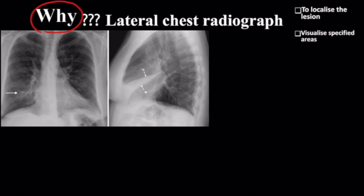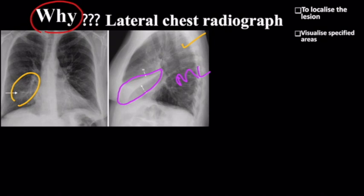I'll give you two examples. In this frontal radiograph, you can see that there is some opacity in the right lower lung zones. We don't know what it is and where it is located. So if you have a lateral chest radiograph as shown here, you can see that there is a wedge-shaped radiopacity in the region overlying the heart. This makes it simple — we know that it is a pathology involving the middle lobe because it is overlying the heart shadow, and due to its wedge-shaped appearance, it's likely due to collapse.